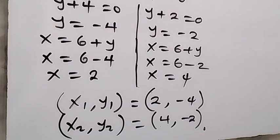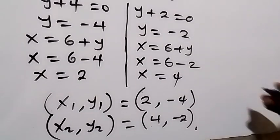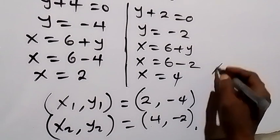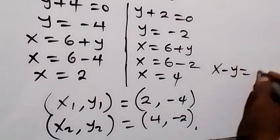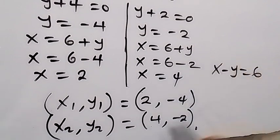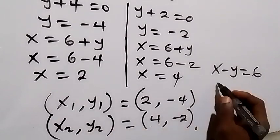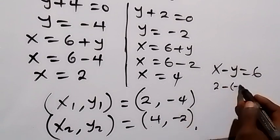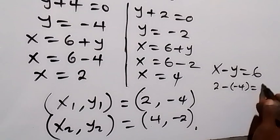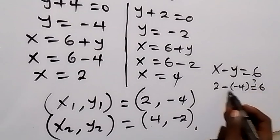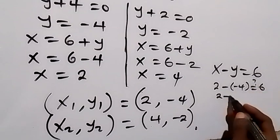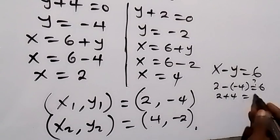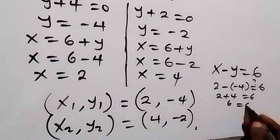Let's check whether the solutions satisfy the original equations. From equation 2, x minus y equals 6. Testing the first solution where x equals 2 and y equals minus 4: 2 minus (minus 4) equals 2 plus 4 equals 6. We have 6 equals 6, so this is correct.